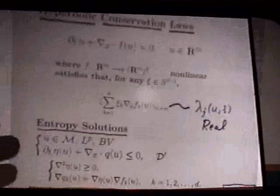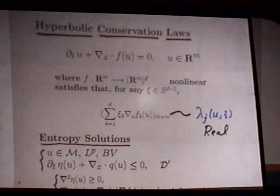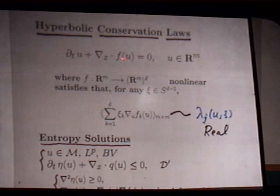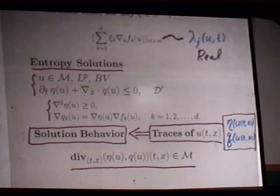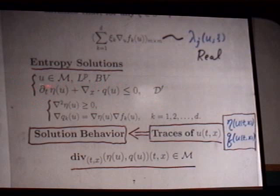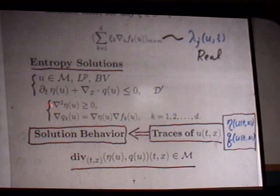An important existing theorem tells us that the entropy solution — in the space of measures, L^p, or BV — satisfies the entropy inequality: ∂_t η(u) + div q(u) ≤ 0 in the sense of distributions, for every convex entropy η determined by the linear hyperbolic equations. The natural mathematical question is: given a solution in this class, what information can we extract about solution behavior? In particular, we need the trace of the solution or the trace along shock fronts, which are essential and unavoidable.